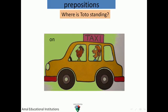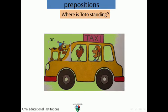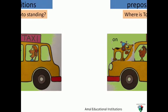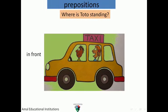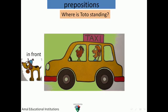Now let's look at prepositions. Where is Toto standing? Toto is standing on the car. Where is Toto standing now? Oh! Toto is standing in front of the car.